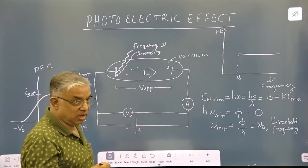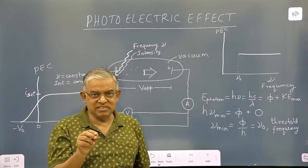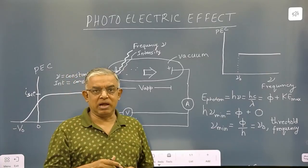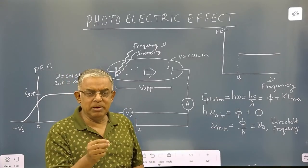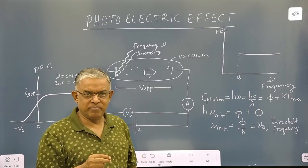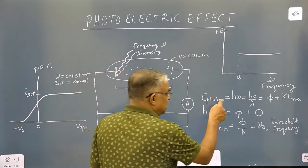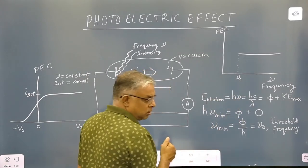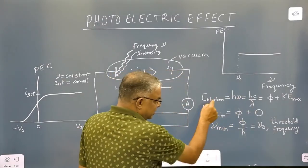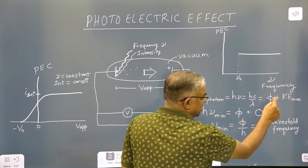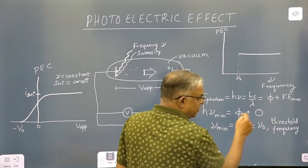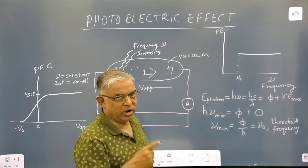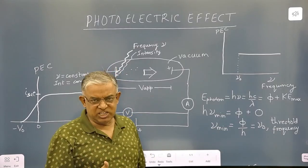There were specific points that Einstein noted. Number one, there was no photoelectric emission below a certain minimum frequency called threshold frequency. Einstein's equation states that the energy of the photon — represented by h·ν or hc/λ — is equal to the work function of the metal plus the maximum kinetic energy of the most energetic emitted electron.